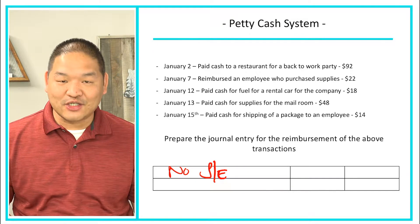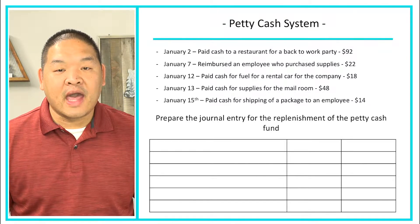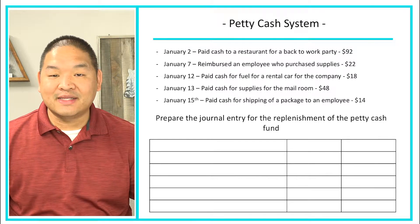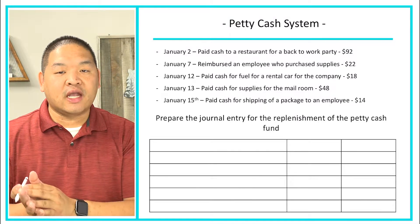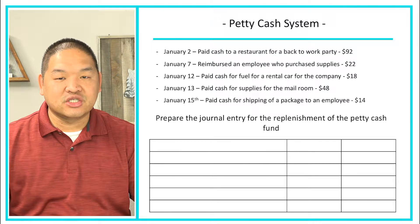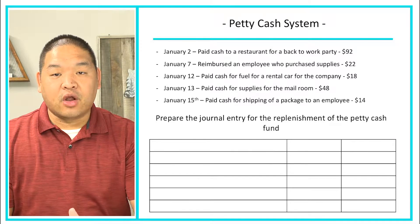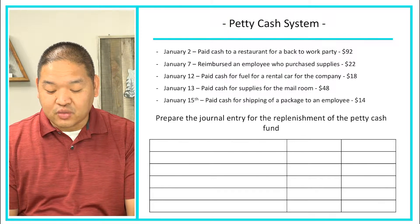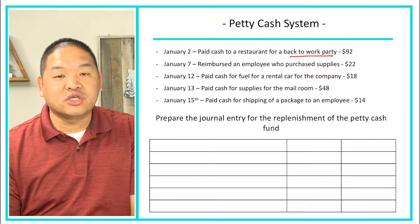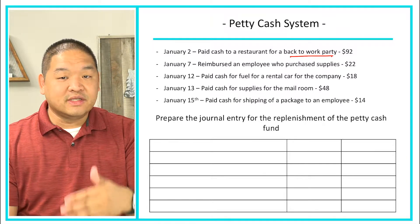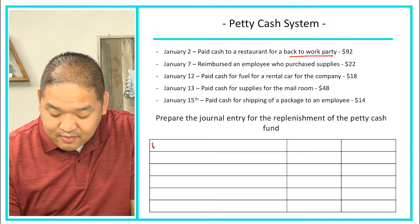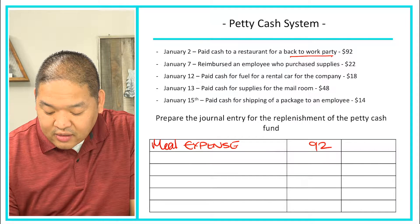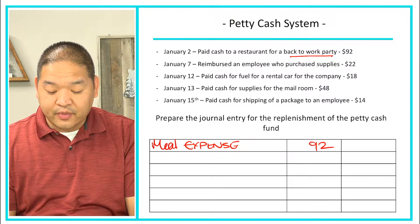Now for Part C, we need to replenish the petty cash. The custodian gives the receipts to the accounting department, which books all the expenses and issues a check for the total amount to replenish the fund. We classify each expense into the appropriate account. The first one — cash paid to a restaurant for a back-to-work party — should be Meals Expense. Increases in expenses are a debit, so we debit Meals Expense for $92. Next, we reimbursed an employee who purchased supplies, so we debit Supplies Expense for $22.